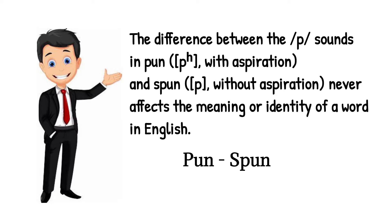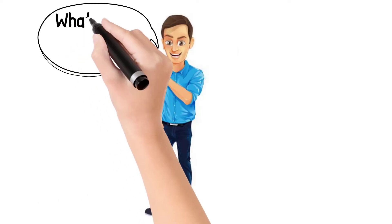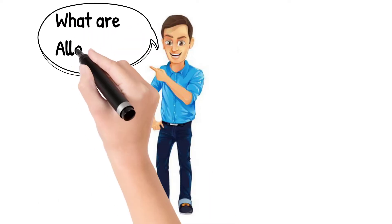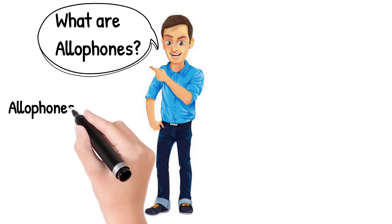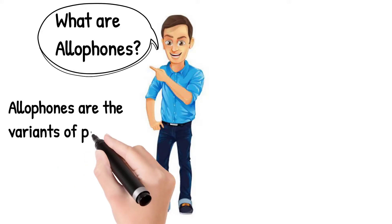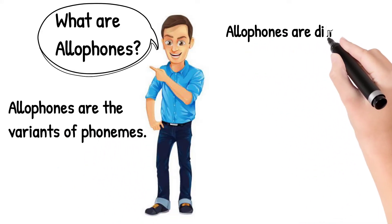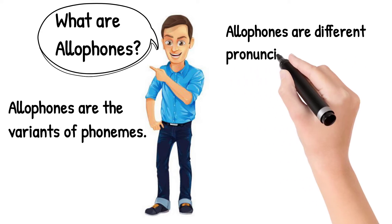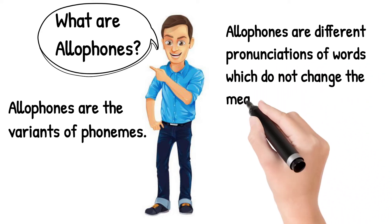So that was the difference between a phoneme and a phone. Now let's look at allophones. What are allophones? Allophones are the variants of phonemes. Allophones are different pronunciations of a phoneme which do not change the meaning of words.